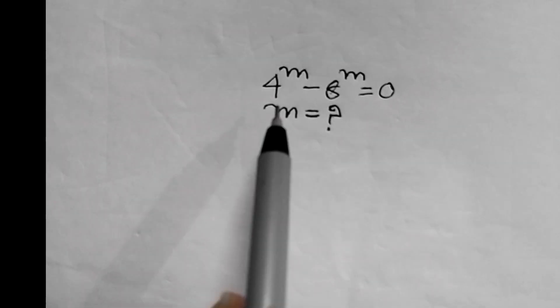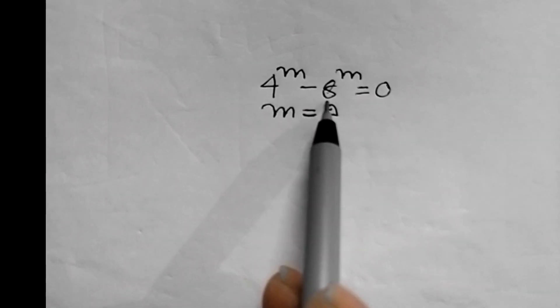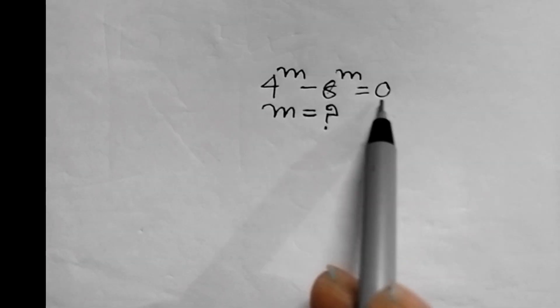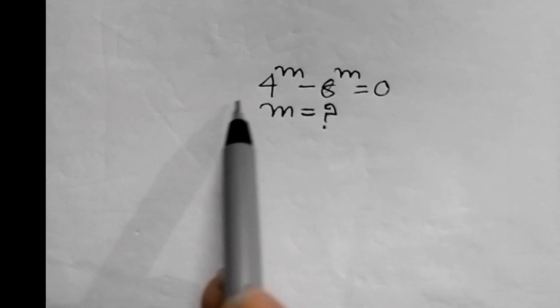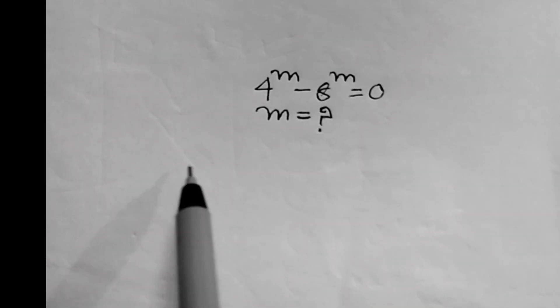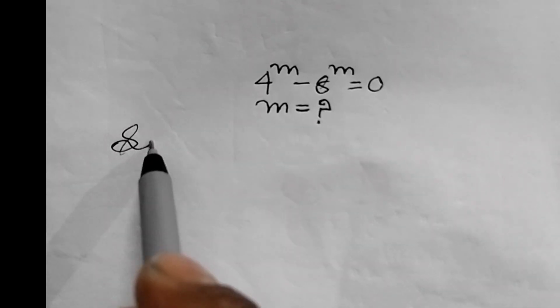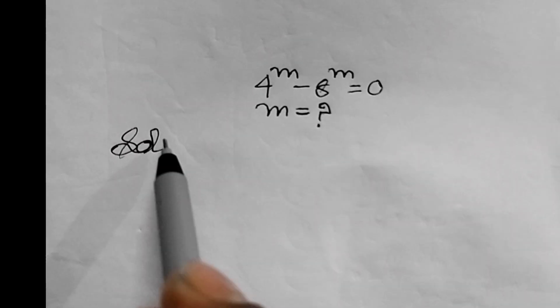4 power m minus 8 power m equals 0. This is our question. We will have to find the value of m. How to find the value of m? Let's see the solution.